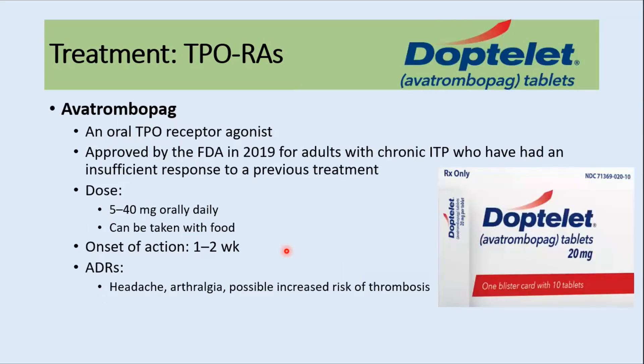Avatrombopag is an oral TPO receptor agonist approved by the FDA in 2019 for adults with chronic ITP who had an insufficient response to previous treatment. The dose is 5 to 40 mg orally daily and it can be taken with food, which is an advantage. Onset of action is around one to two weeks, and common side effects include headache, arthralgia, and possible increased risk of thrombosis.